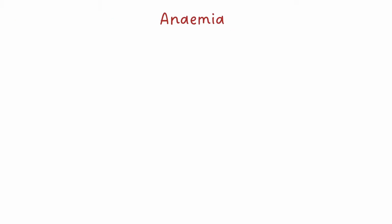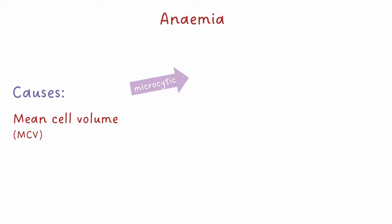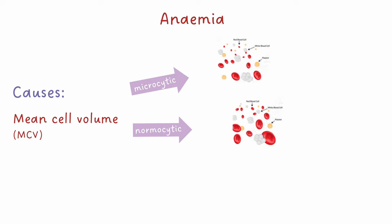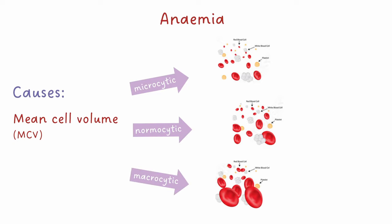Anaemia means low haemoglobin. When trying to decipher the cause, it's useful to also look at the mean cell volume. Depending on the MCV value, anaemias can be categorised into microcytic, meaning small red cells; normocytic, meaning normal-sized red cells; or macrocytic, where the red cells are large. Each of these has different causes.